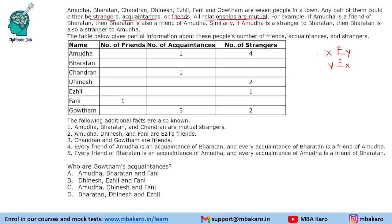The table below gives partial information about these people's number of friends, acquaintances, and strangers. Since there are 7 people, each person will have 6 relations — a person is not related to himself. So we will have a total of 6 relations. For example, Gautam will have 1 friend and Amudha will also have 1 friend. Based on this table and the information given, we need to find out the relationship between each of these people.